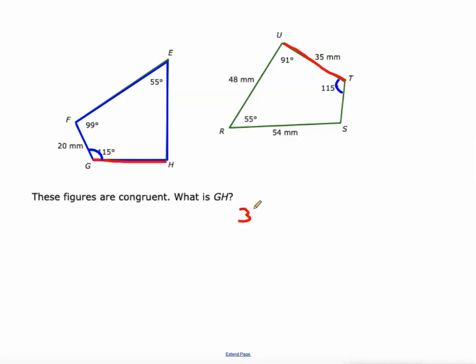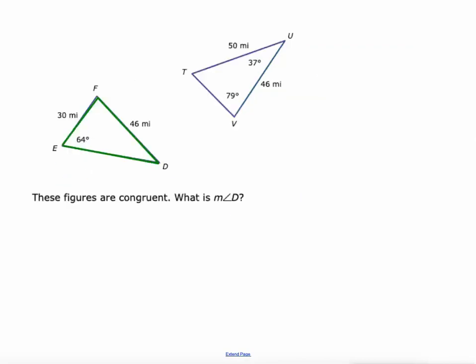These figures are congruent. What is the measure of angle D? All right, well angle D, this one right here. All right, well, wow, I mean our measures don't match up very well. I do see this 64 degree angle right here. It's got to be this one because none of the other two angles are 64 degrees, so this one must be 64 degrees. Maybe that'll help us a little bit.